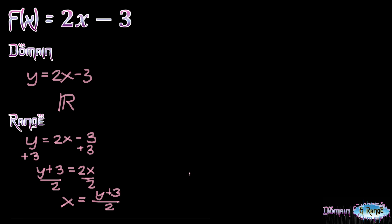Now, let's look at whether there are restrictions for possible values of y. The variable y can be found in our numerator. If we use any values of y, x will still be real because the denominator is a constant. For example, if y is 1: 1 plus 3 is 4, divided by 2 is 2 — a real number. If y is 0: 0 plus 3 is 3, giving 3 halves — a real number. If y is negative 10: negative 10 plus 3 is negative 7 over 2 — a real number. This means there are no restrictions for the values of y, so the range of this linear function is also the set of real numbers. Both domain and range of a linear function are the set of real numbers.